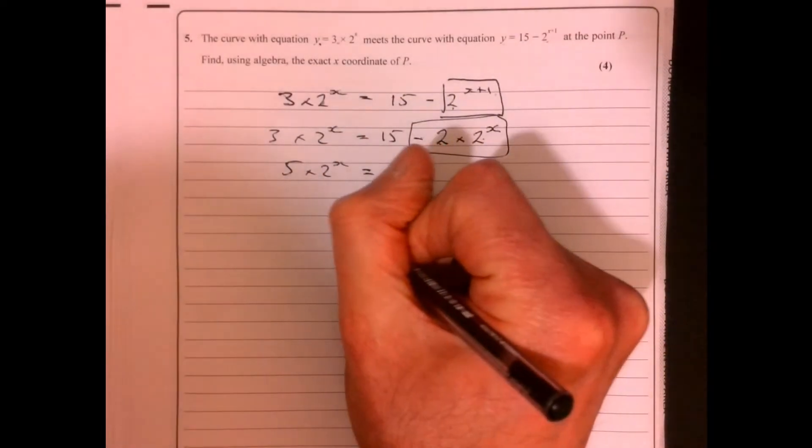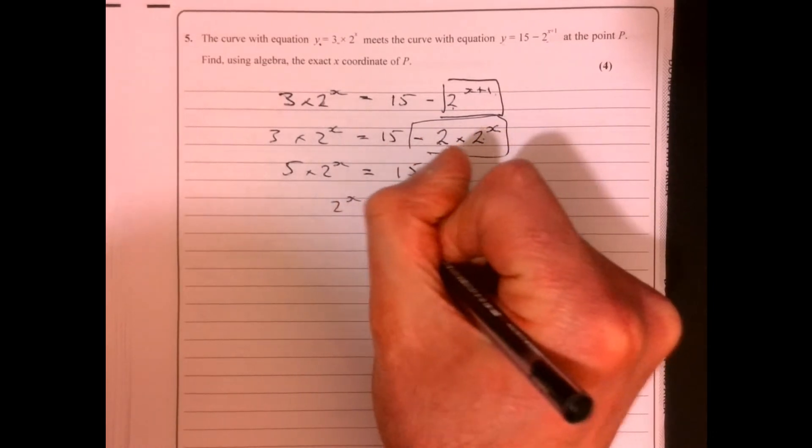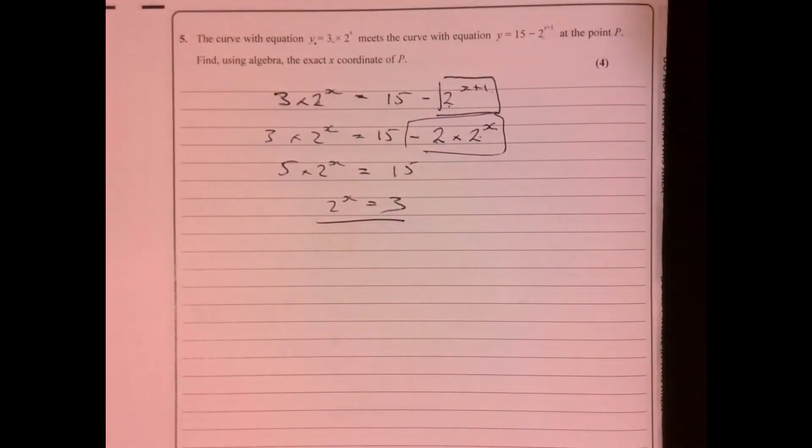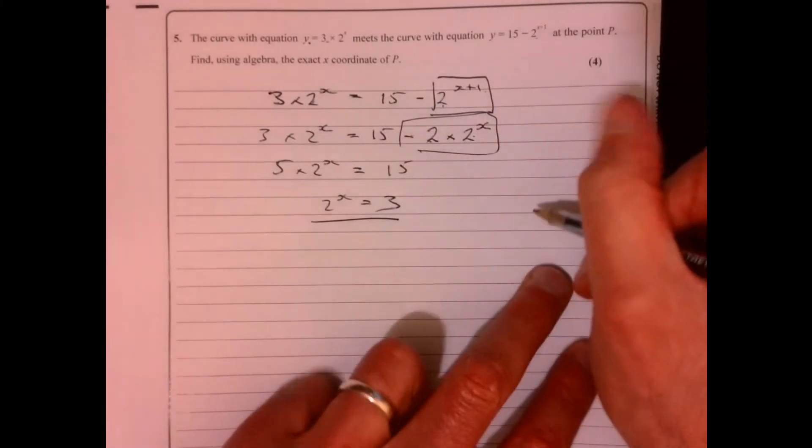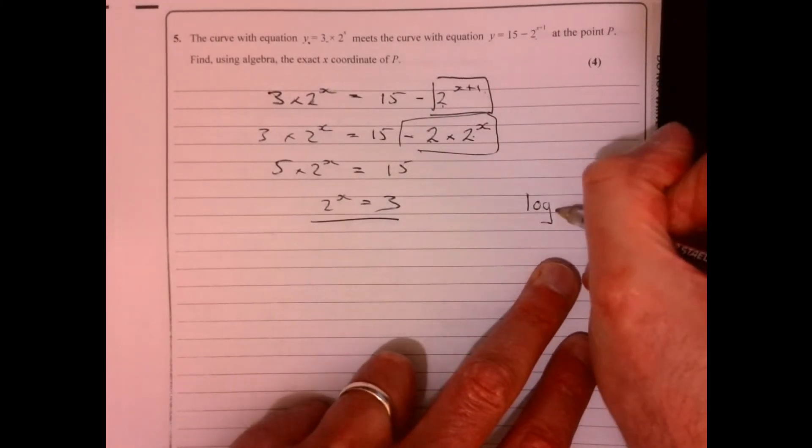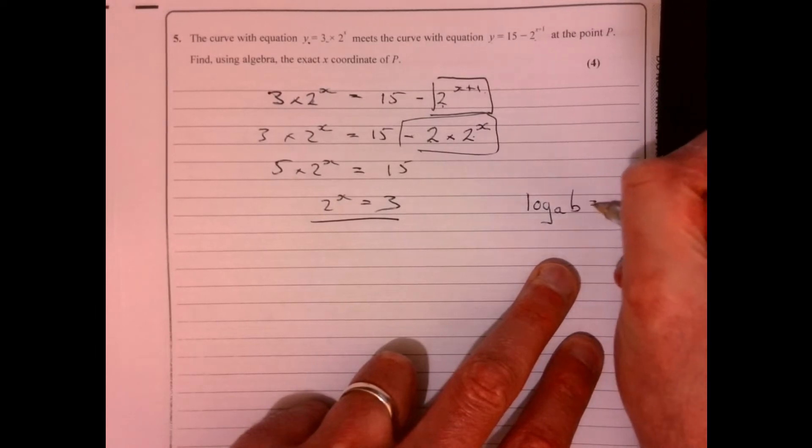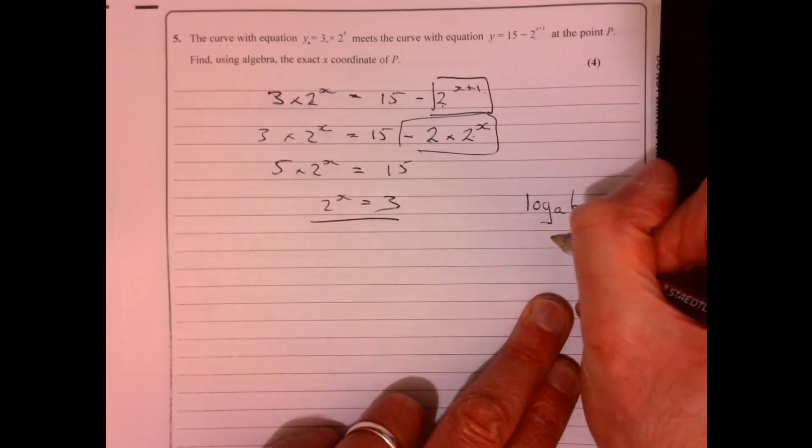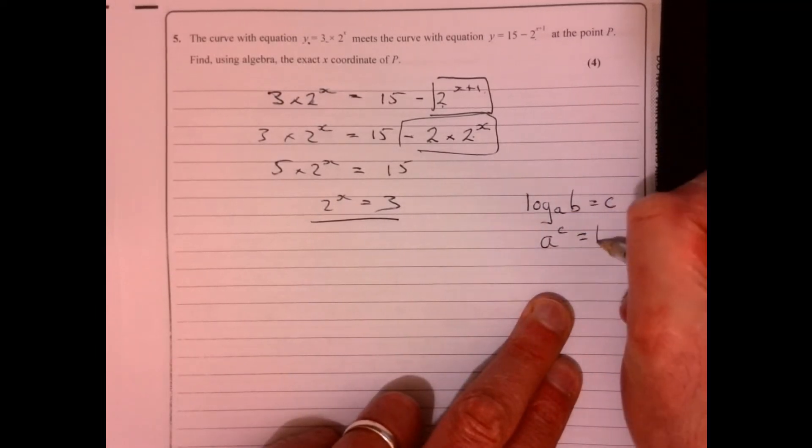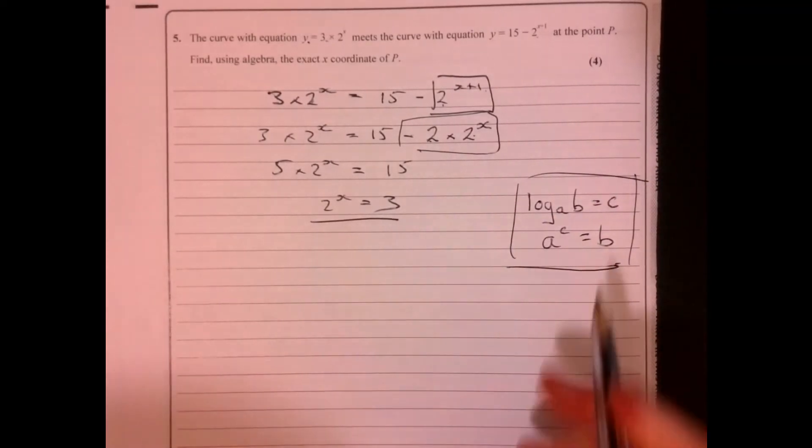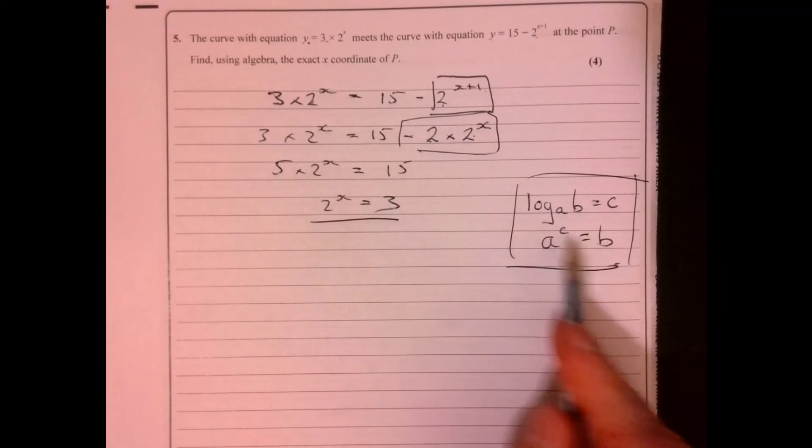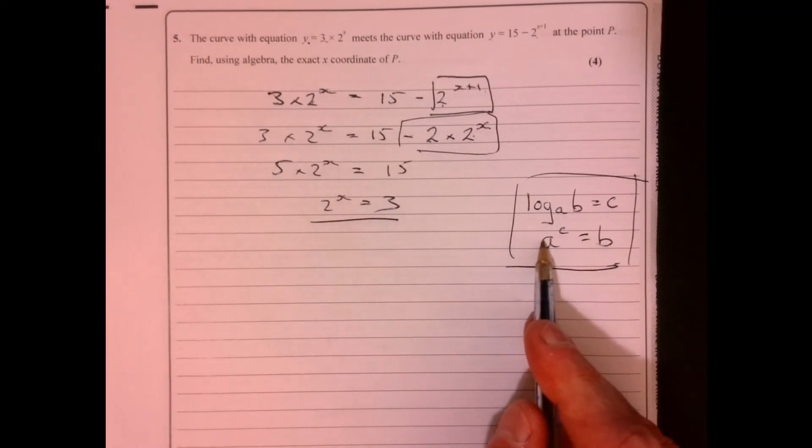Divide both sides by two. So therefore, that gives me that figure there. Now we're not quite there yet. We need a little bit of knowledge of logs here. And what you should know is this here. All right. And this is really important to know, understand this part. So if you know this, then you can just rearrange this part here, can't you?